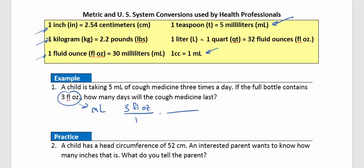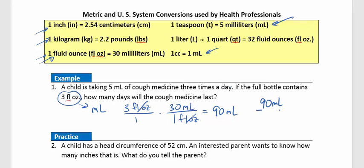We want to divide out the fluid ounces and convert to milliliters. Since 1 fluid ounce equals 30 milliliters, the fluid ounces divide out nicely, leaving us with 3 times 30, which gives us 90 milliliters. We're giving 5 milliliters three times a day, which is 15 milliliters per day. So we take 90 divided by 15, which gives us 6 days worth of medicine.